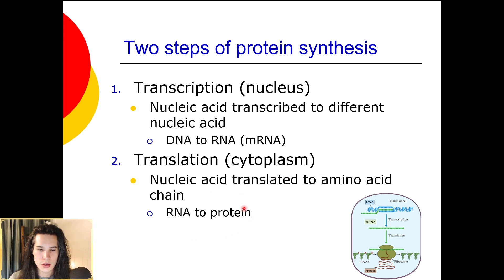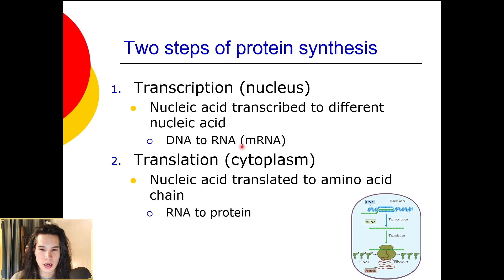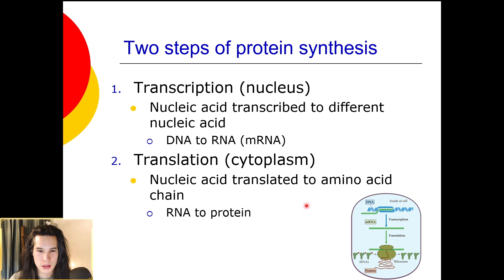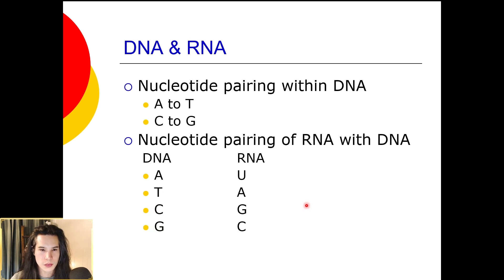If we're dealing with eukaryotic cells, there is actually a transition step between transcription and translation, and that is splicing. The mRNA gets spliced or modified before being sent out of the nucleus into the cytoplasm, and we'll talk about that later.